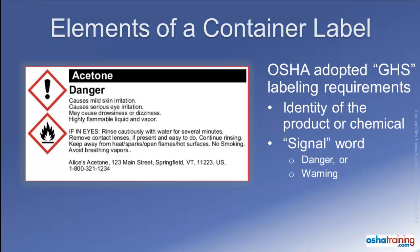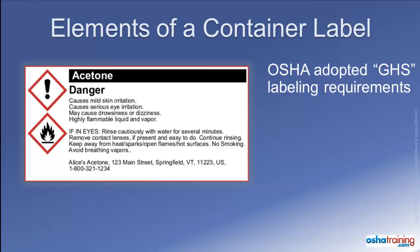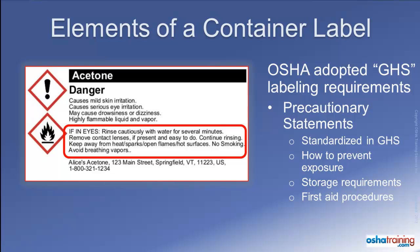The next section contains one or several hazard statements. These standardized hazard statements give employees a quick warning about the hazards associated with the product, and differ according to the classification and category of hazard presented by that product. The next section shows precautionary statements, which are also standardized in the GHS labeling system and convey information about how to prevent or lessen exposure to the chemical, considerations for storage, first aid procedures for accidental overexposure, how to respond to an accidental spill or release, and information about proper disposal. Additional safety and health-related information can be found on the product's Safety Data Sheet.